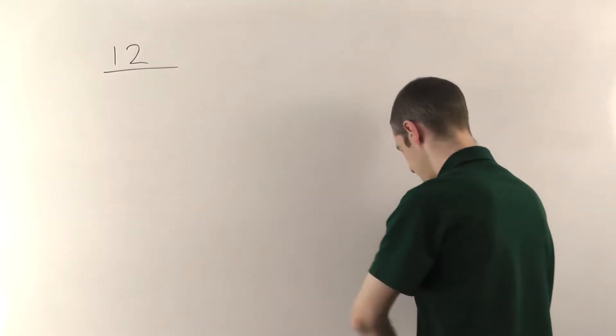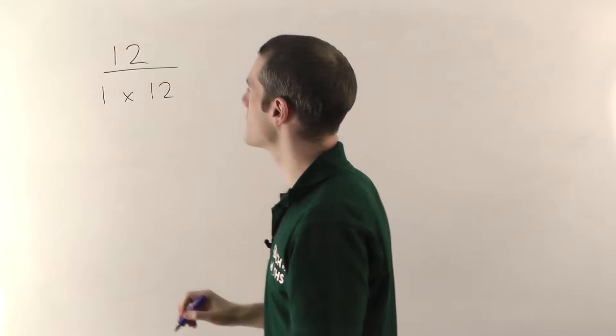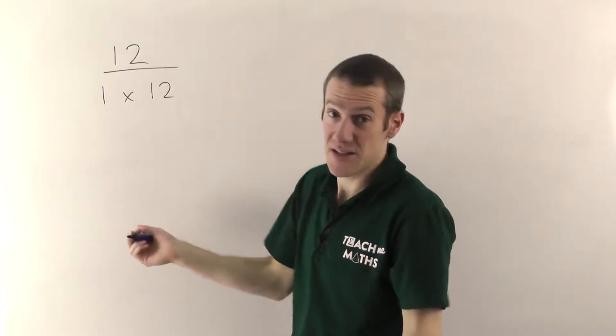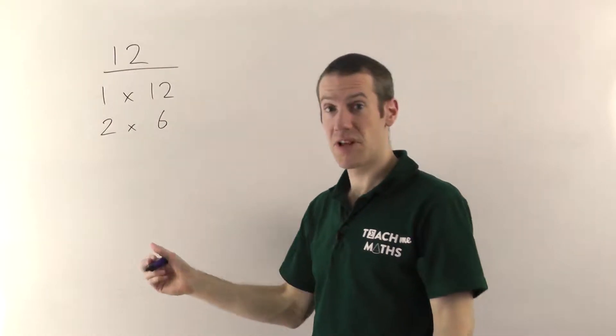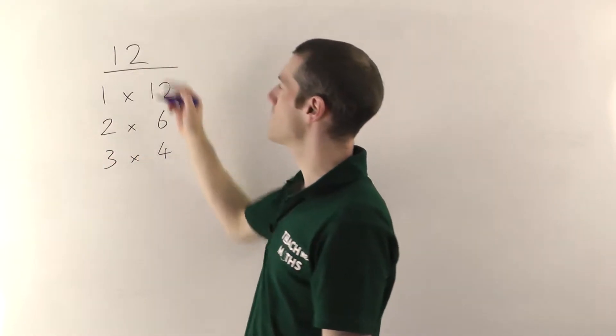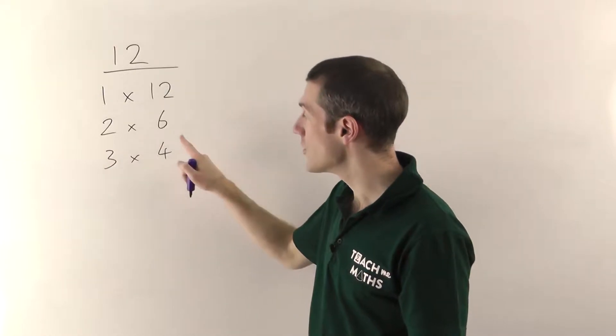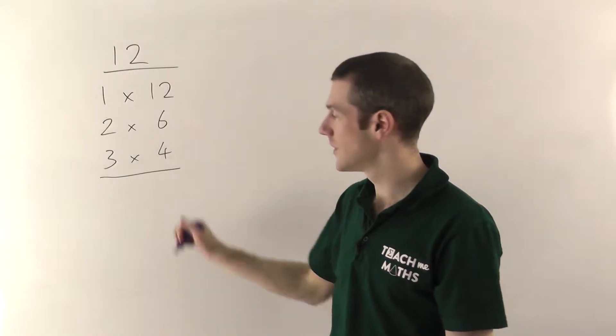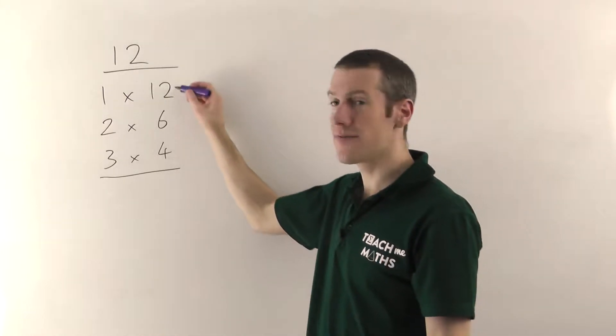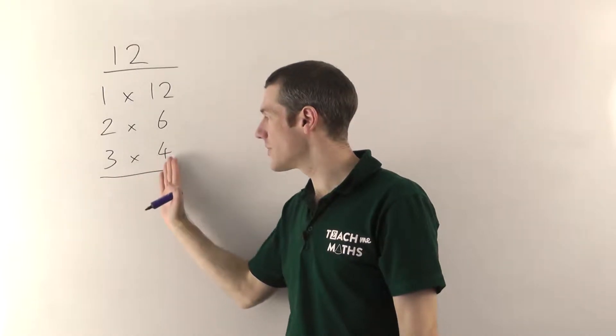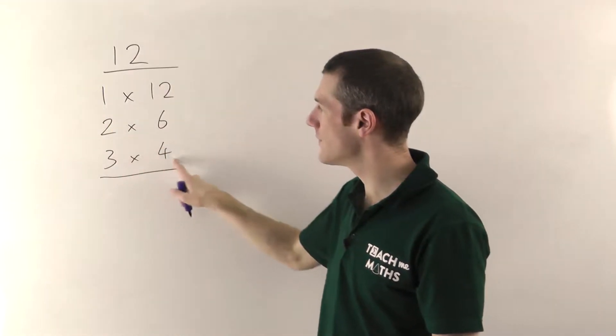So we'll try it with 12 again and you just start with 1 and you say 1 times what gives me 12. Well 1 times 12 obviously gives me 12. And then you try 2. Does 2 go into 12? Yes, it's an even number. And 2 times 6 would give me 12. Does 3 go into 12? Yes. So it's 3 times 4 would give me 12. Does 4 go into 12? Ah. Well if you ever are trying a number or you've got a number that you've already got here, you just stop. We were trying 4, we've already got it, so you stop. And that guarantees that you've got all the factors. You don't need to try any others. You don't need to try 5 or 7 or 8 or 9 or anything like that. As long as you've got a number here that you're trying, you just stop at that point and then you know you've got them all. So the factors of 12 would be 1, 2, 3, 4, 6 and 12.